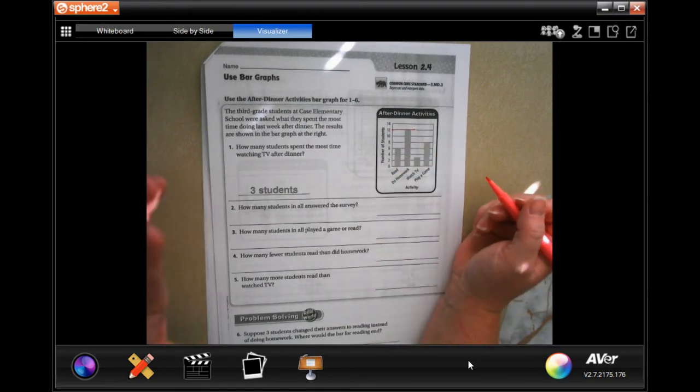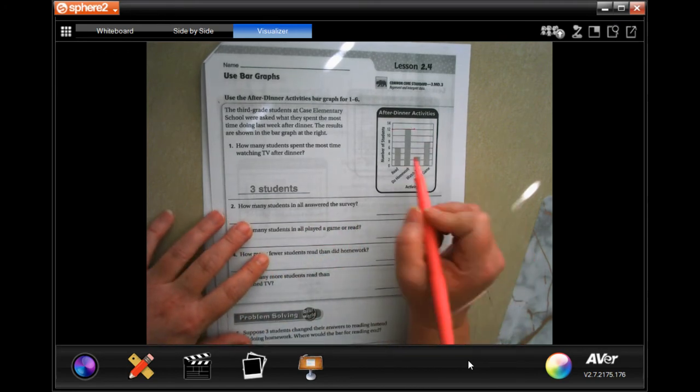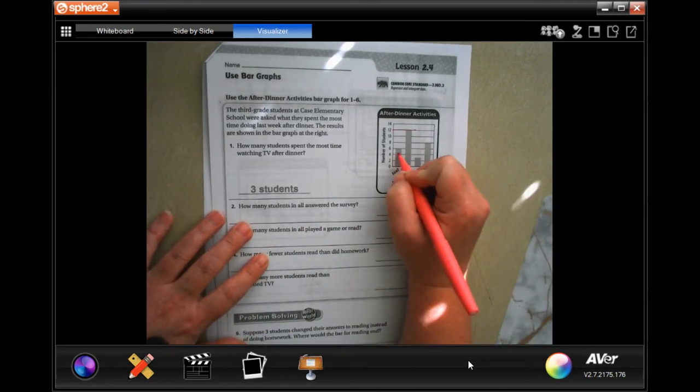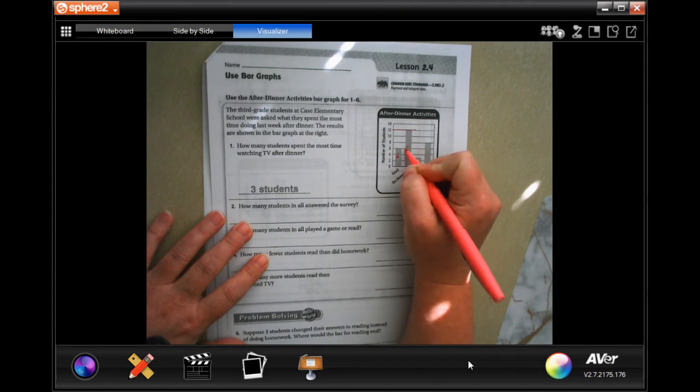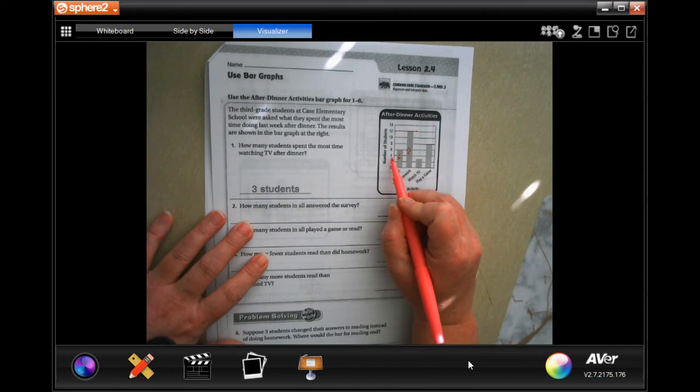For do homework we're at 12. Pretty easy. How many students in all answered the survey? So all we have to do is find out how many are in each one. Read was six, homework was 12, watch TV you'll notice it's in between two and four. Well the only number in between two and four is three.